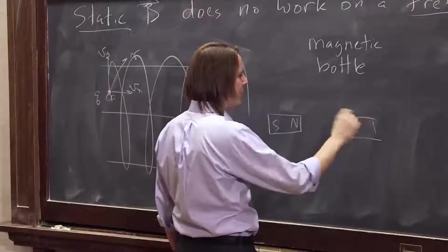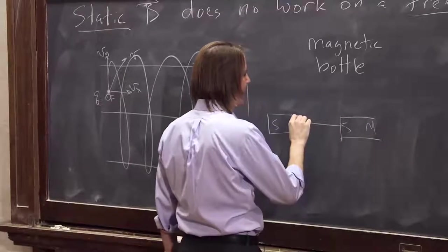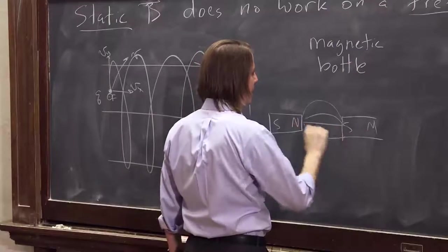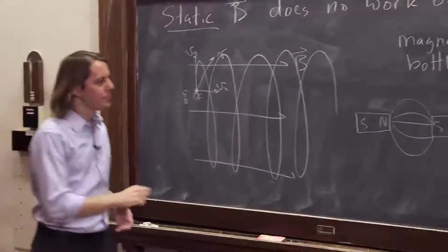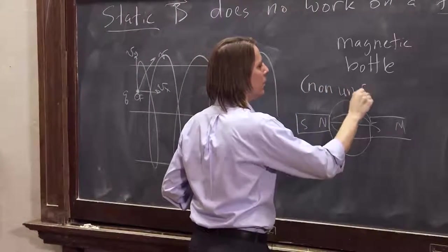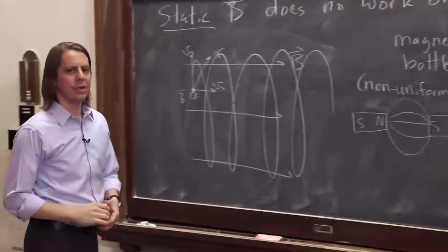So the field lines want to go from north to south. But if you get these really close, like that, it'll go from north to south. And then instead of going around, it'll kind of go like that and like that. And you'll get this case where you have a non-uniform field.